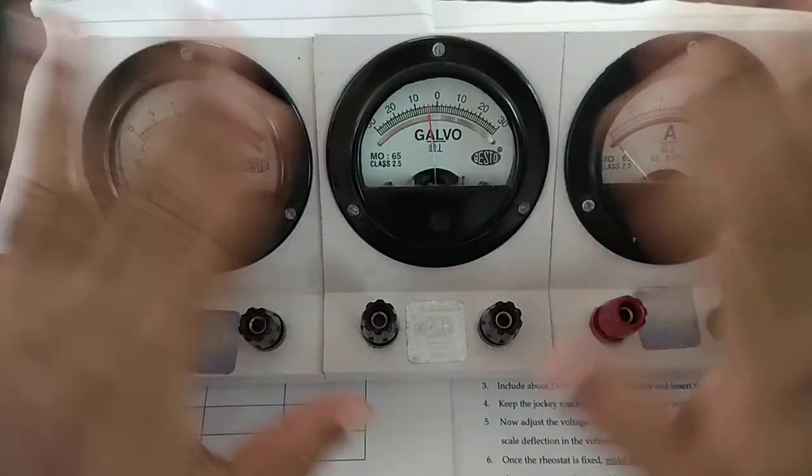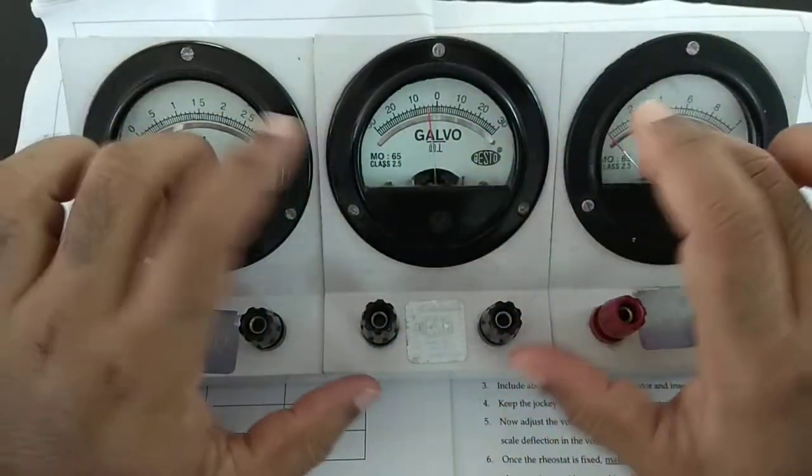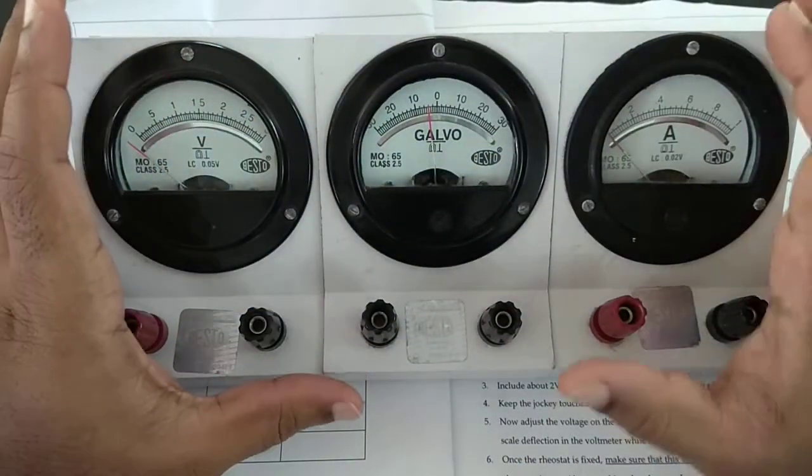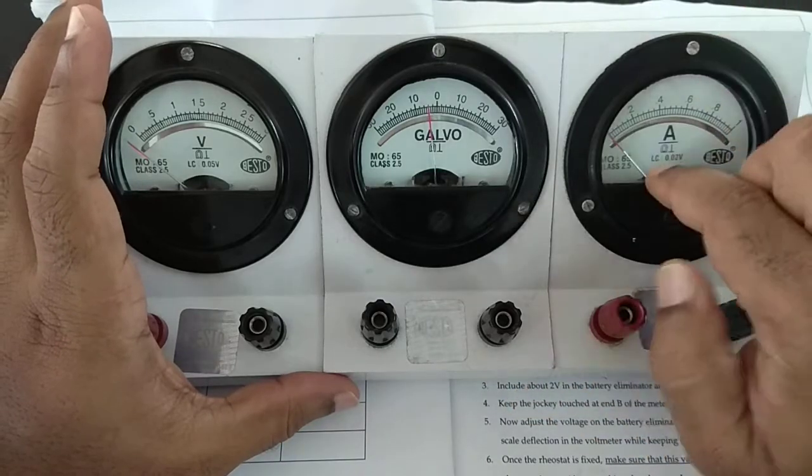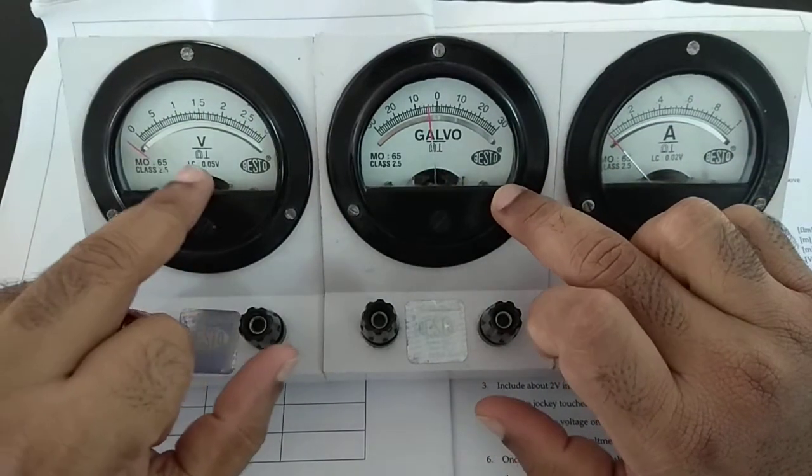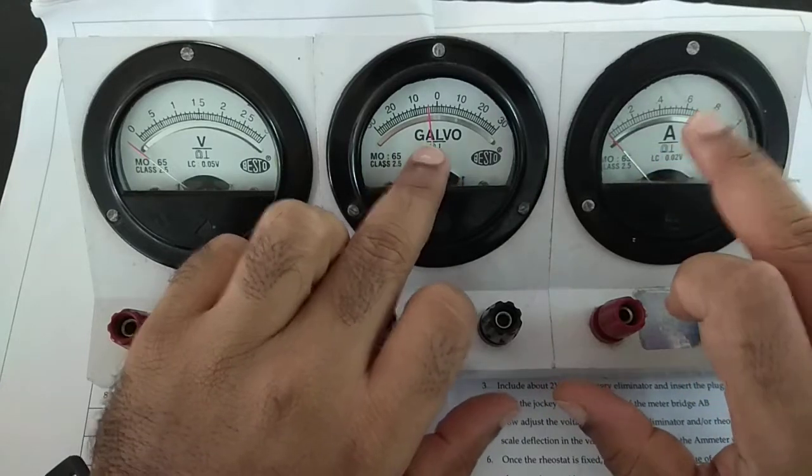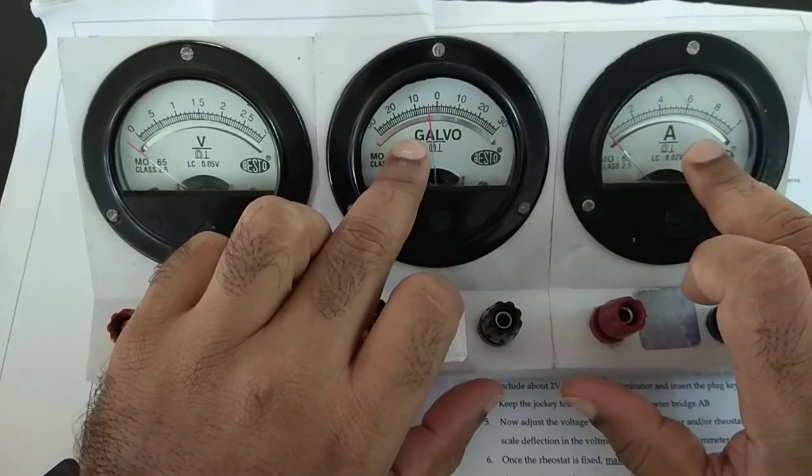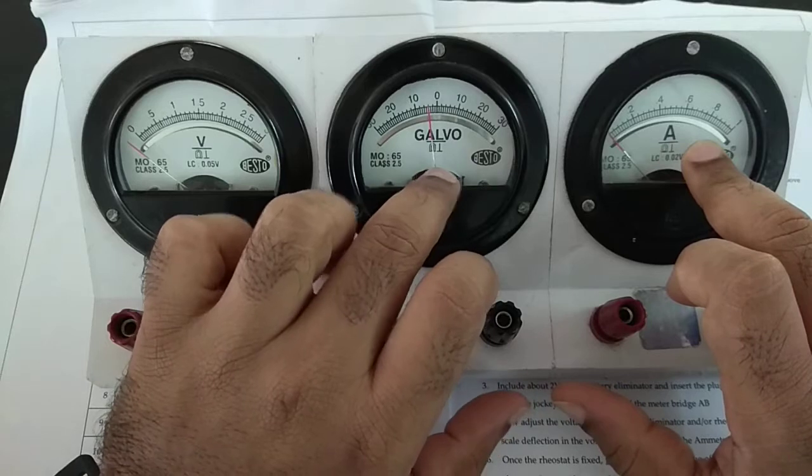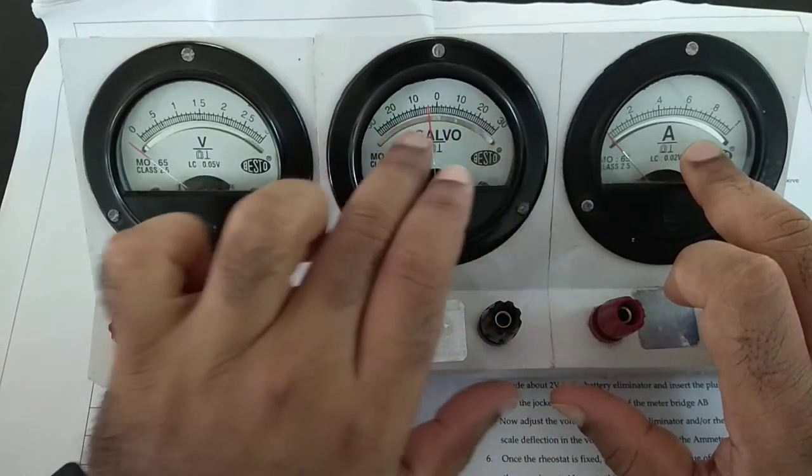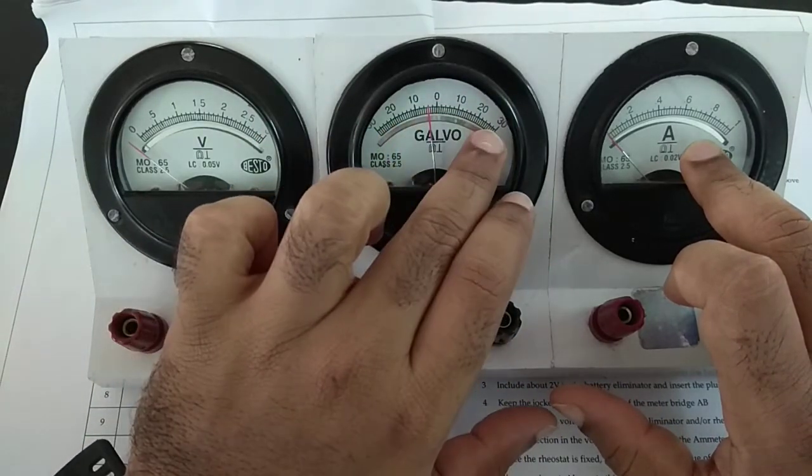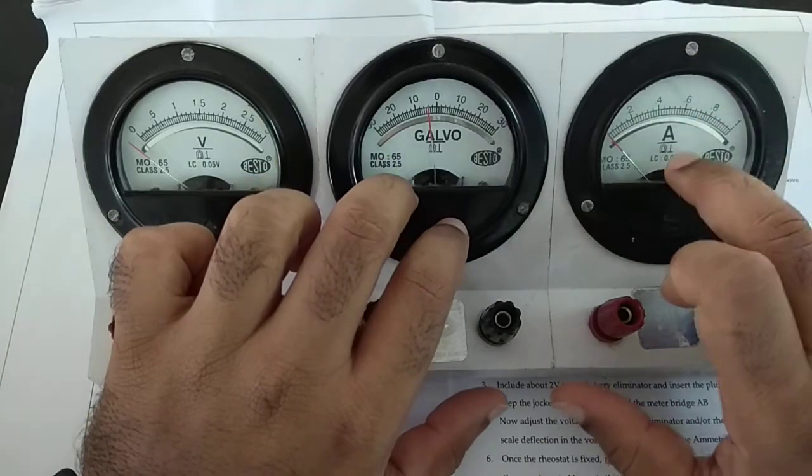Well, strictly speaking, all three instruments are ammeters. They measure current. Only the galvanometer is the center-zero instrument which shows the direction whether it's this way or that way.